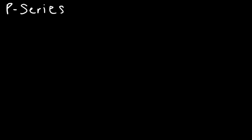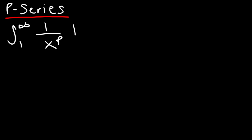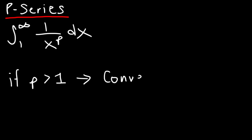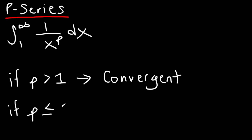The last two examples can be explained by something known as the p-series, which you'll hear more about in Calculus 2. For the improper integral of 1 over x^p from 1 to infinity: if p is greater than 1, the integral is convergent; and if p is less than or equal to 1, the integral is divergent.